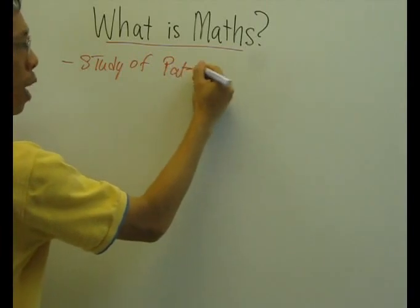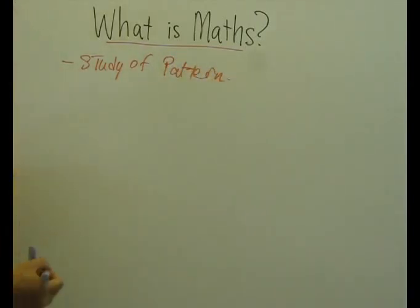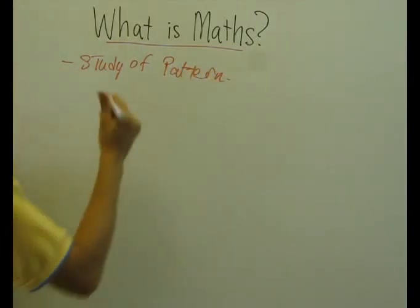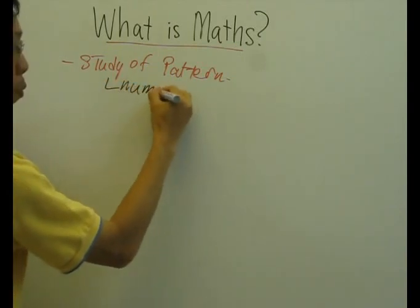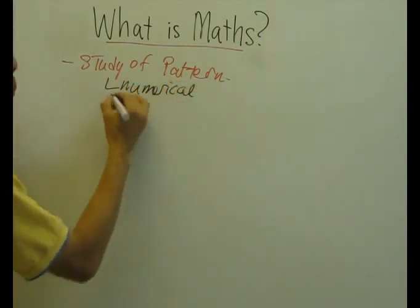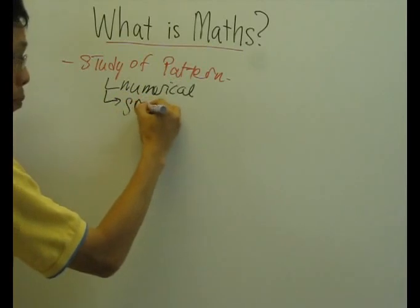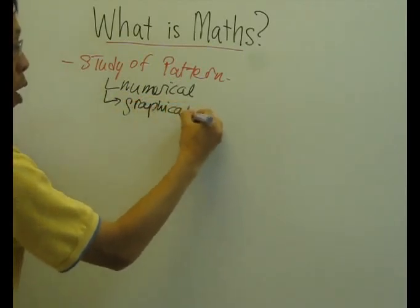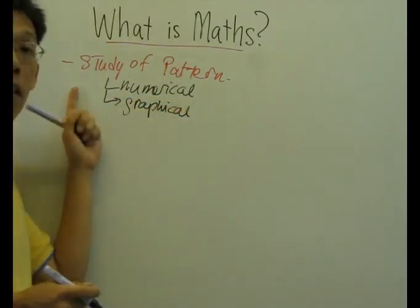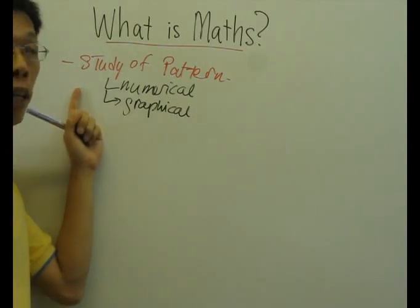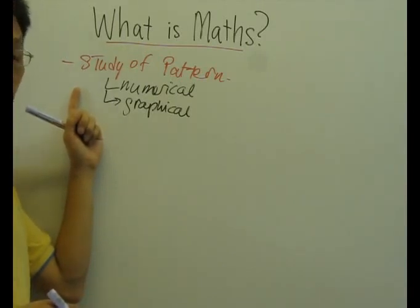And what pattern are we talking about? This pattern here can be numerical, it can be graphical. Numerical pattern could be, for example, you're looking at quadratic equations and then quadratic formula, AX squared plus BX plus C. And if you set that equal to zero, then you will find that if you solve that, you always get a formula. And that formula is given the name of quadratic formula.